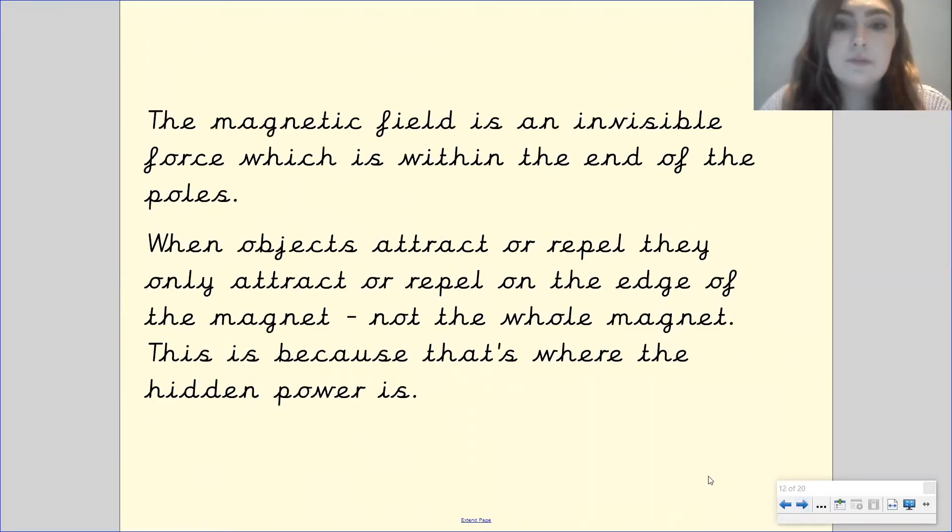So the magnetic field is an invisible force which is within the end of the poles, so it's within just the ends. When objects attract or repel they can only attract or repel on the edge of the magnet where the poles are, not the whole magnet. So this bit here is not magnetic, it's just these bits. This is because this is where that hidden power or that invisible power is, it's in the end of the magnet.